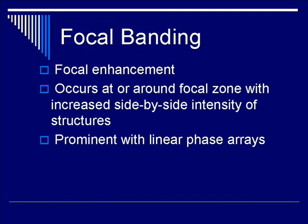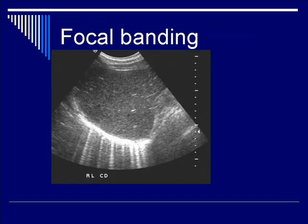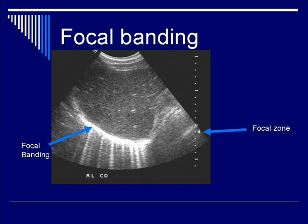Now let's move on and talk about focal banding. Focal banding, in short, is focal enhancement that occurs at or around the focal zone with increased side-by-side intensity of structures. It is most prominent with linear phase arrays. This next example illustrates focal banding in a clinical setting — a right upper quadrant scan of the liver. The posterior edge of the liver is fairly hyperechoic. The caret on the right-hand side of the screen is the adjustable location of the focal zone, and around this focal zone occurs focal banding, giving you an artificial enhancement of the ultrasound signal at that particular location.